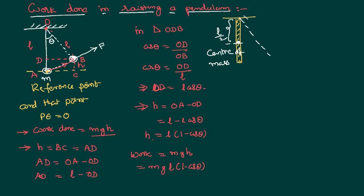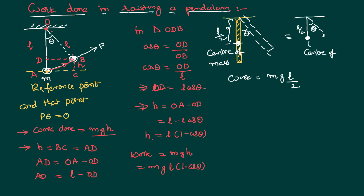Everything else is the same as the previous case. The rod has gone to a height h at angle theta. Therefore, I can write work done — as proved in the previous case — as mg, but not l. I have to take only l/2, because I can draw an equivalent diagram where the entire mass is concentrated at the centre of mass at l/2. That is the point called centre of mass where the total mass of the system appears to be concentrated. So, as per the previous formula, work done equals mgl/2 × (1 − cosθ).